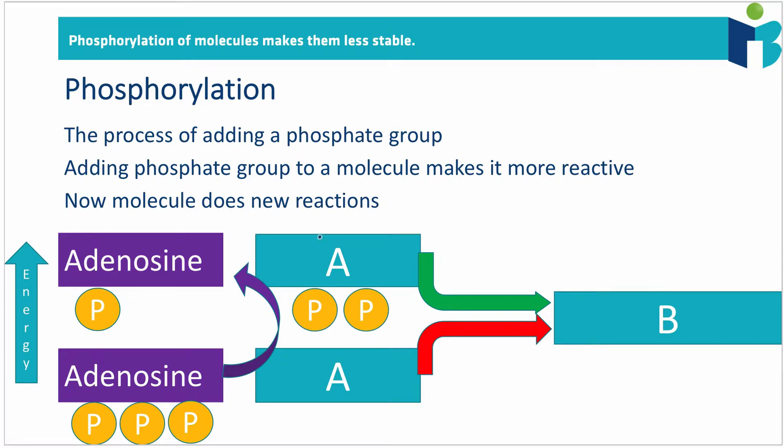Then A is going to increase in its energy level. So it's going to have more energy, which means that it's less stable. Molecules always want to be at the lowest state of energy. They want to be the most chilled out. So when A gets two phosphate groups, it becomes less stable.